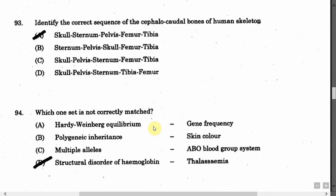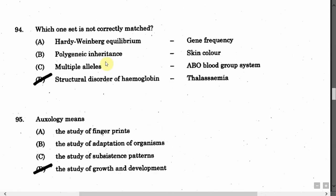The next question is: Which one set is not correctly matched? Option A: Hardy-Weinberg equilibrium — gene frequency. Option B: Polygenic inheritance — skin color. Option C: Multiple alleles — ABO blood group system. Option D: Structural disorder of hemoglobin — thalassemia. The correct answer is Option D.